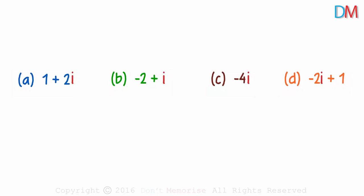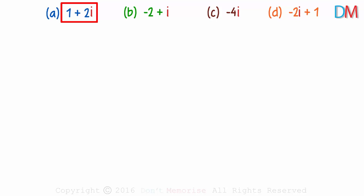Okay, the first complex number is 1 plus 2i. How do we write it as an ordered pair? It can be written as 1 comma 2, real part and the imaginary part.